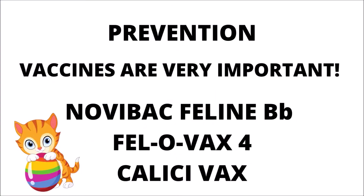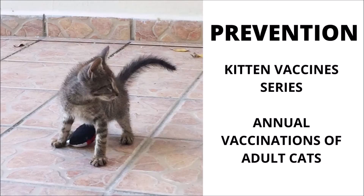The most critical aspect in the prevention of upper respiratory infections is the use of vaccines. Some examples of the vaccines in use in the veterinary setting are: the Nobivac Feline BB, which prevents Bordetella bronchiseptica in cats, and the Felovax 4 Plus Calicivax, which helps prevent herpes and calicivirus. Kittens should receive at least two doses of these vaccines three to six weeks apart, while adult cats should receive these vaccines annually.